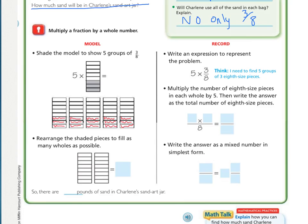So now, if we look right here, it says multiply the number of 8th size pieces in each hole by 5. Then write the answer as a total number of 8th size pieces. So I could go, well, that's 3, 6, 9, 12, 15. Or I could say that's 3 times 5, or 5 times 3.